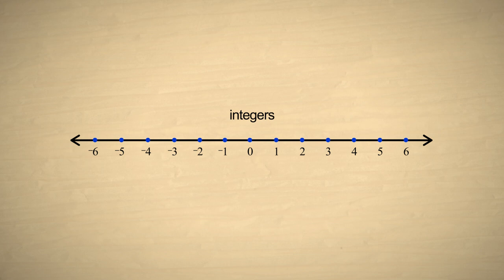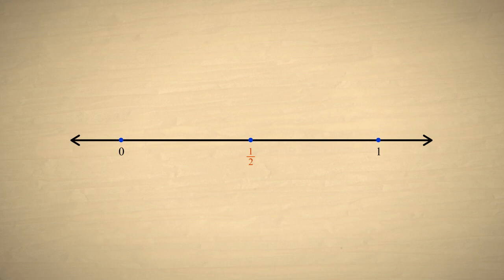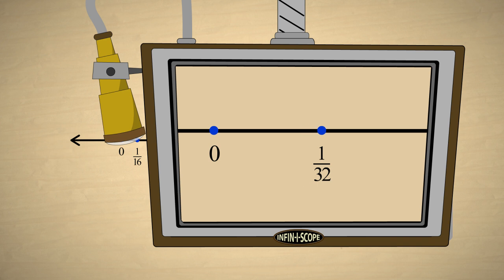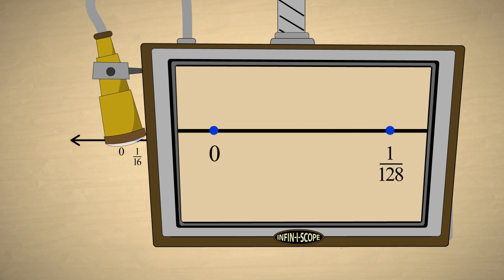Take for example the two integers zero and one. Between zero and one is the rational number one-half. Between zero and one-half is one-fourth. Between zero and one-fourth is one-eighth, and so on. You can continue this forever, naming an infinite number of rational numbers between zero and one.